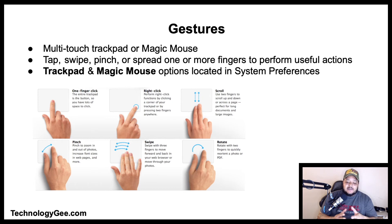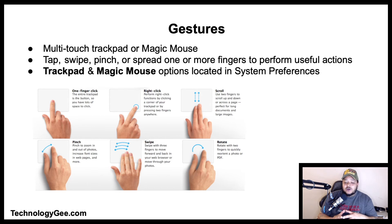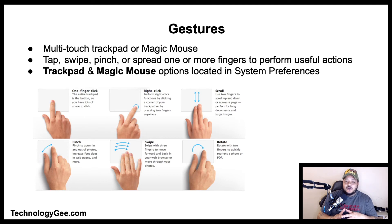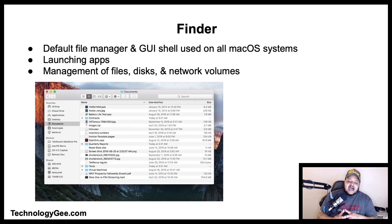With the multi-touch trackpad or the Magic Mouse, Mac allows users to tap, swipe, pinch, or spread one or more fingers to perform useful actions. The trackpad and Magic Mouse options can be located in System Preferences.